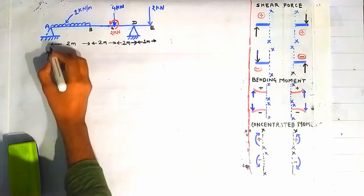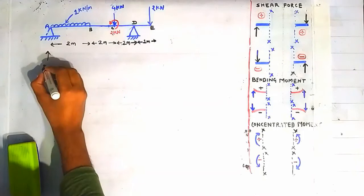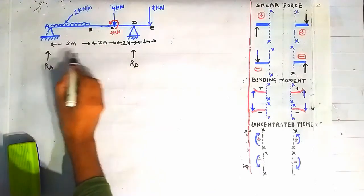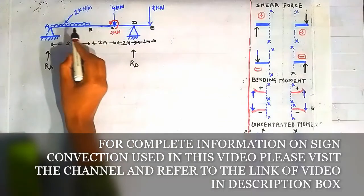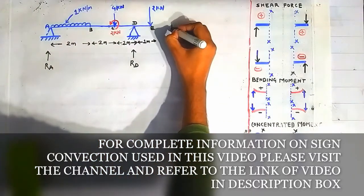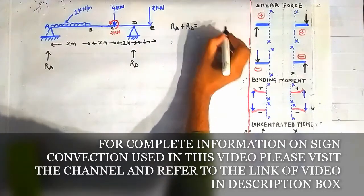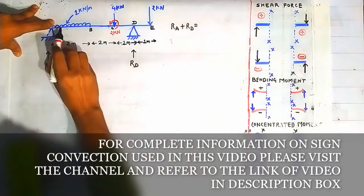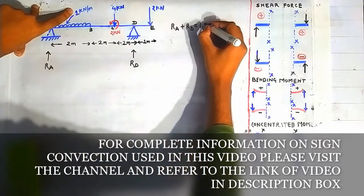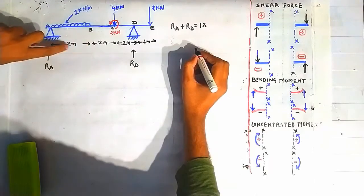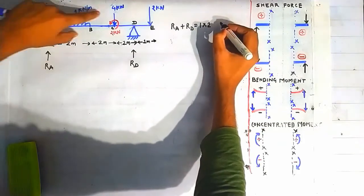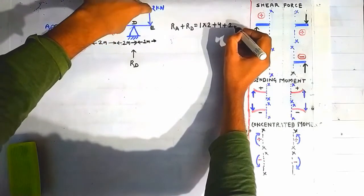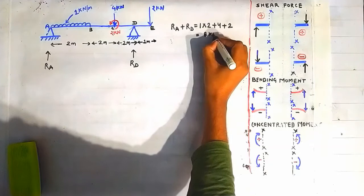The first step is always to find the reactions at the two supports A and D. At support A the reaction is RA and at support D the reaction is RD, both acting in the vertically upward direction. Since there is no horizontal load, RA plus RD equals the net vertical downward load: the UDL gives 1 × 2 = 2 kN, the 4 kN load gives 4 kN, and the 2 kN load gives 2 kN, totalling 8 kN.